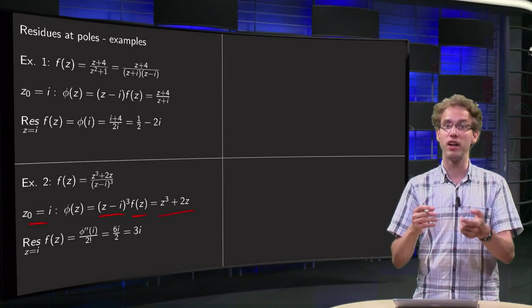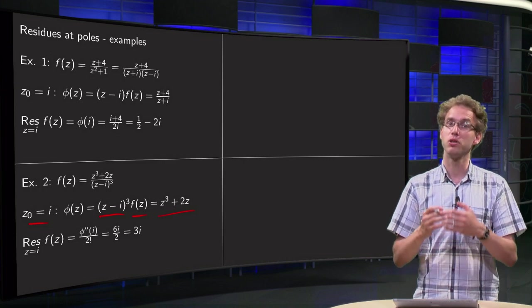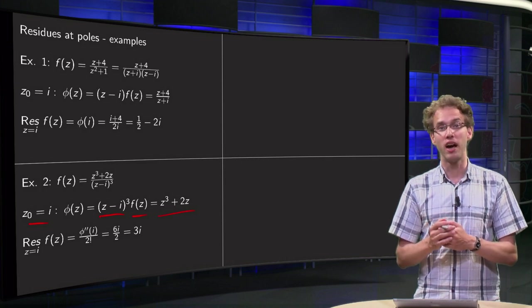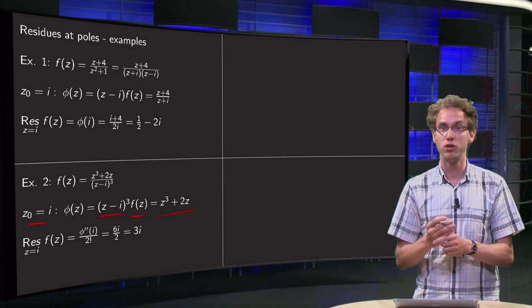We have to differentiate twice, plug in the z zero and divide by 2 factorial. What do we get? Residue at z zero equals i is the second derivative of phi at i divided by 2 factorial.